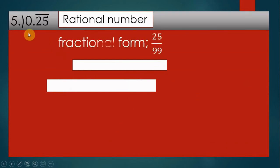Number five: 0.25 with a vinculum is a rational number. Its fractional form is 25 over 99.